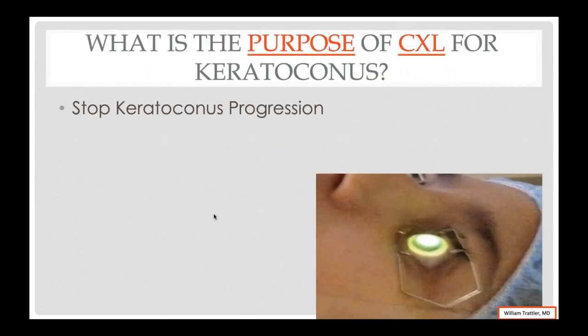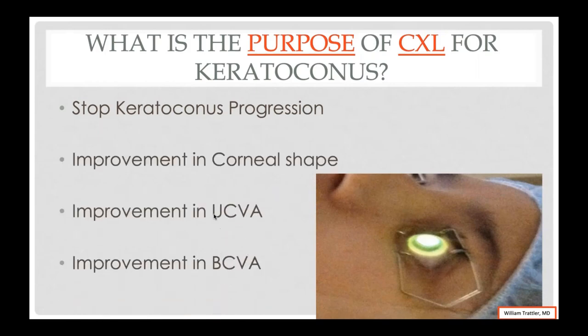Crosslinking does more than stop the progression of keratoconus. It's very effective at stopping progression — 98% to 99% successful — but more importantly, you get flattening and reshaping of the cornea after crosslinking. That can, in many cases, result in improved uncorrected visual acuity and improved best corrected visual acuity. We see patients year over year getting better and better over time.